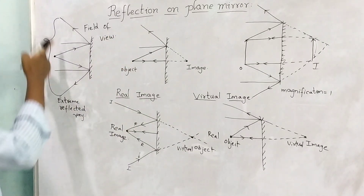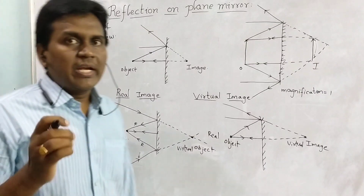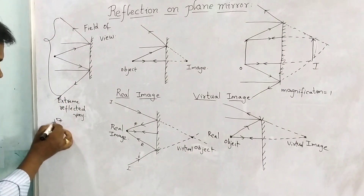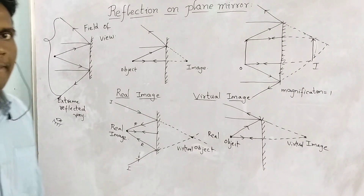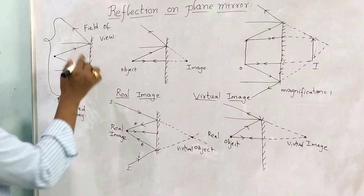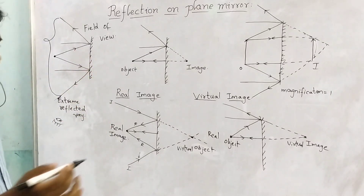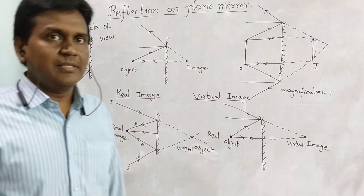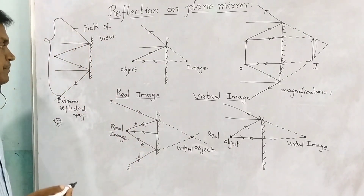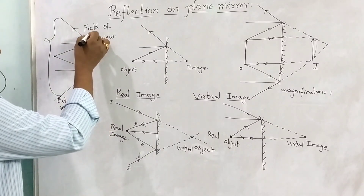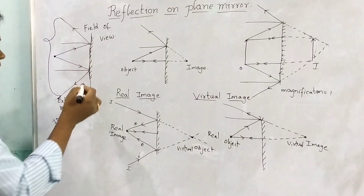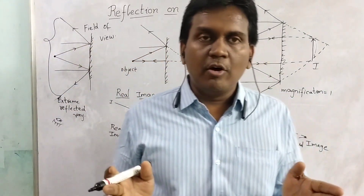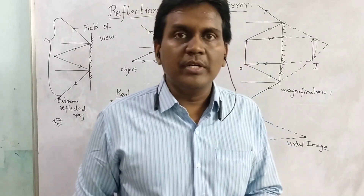That means if our eye lies between these two extreme reflected rays, we can see the image. If our eye is outside this region, we are unable to see the image formed in the plane mirror. This field of view will increase when the distance between the object and the mirror decreases, and it will also increase if the size of the plane mirror increases.